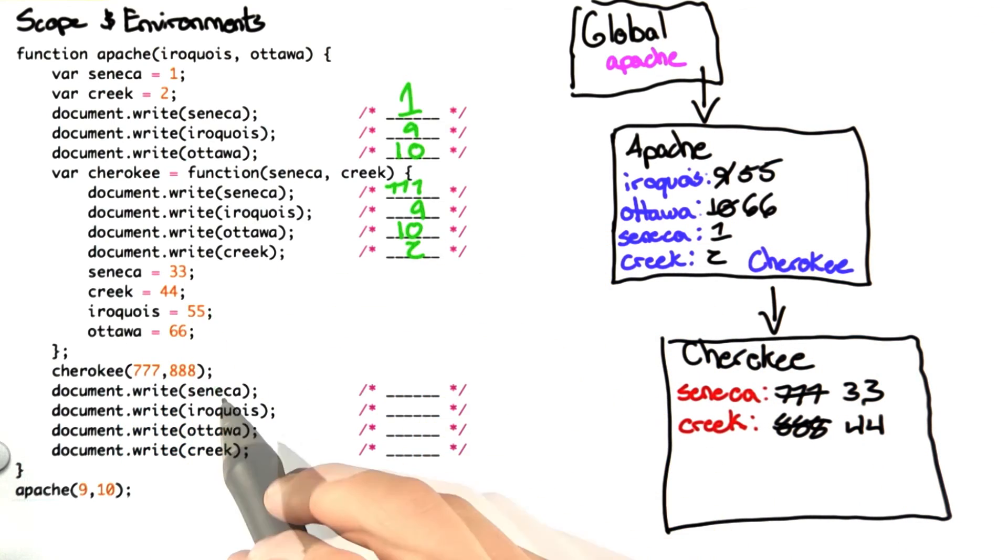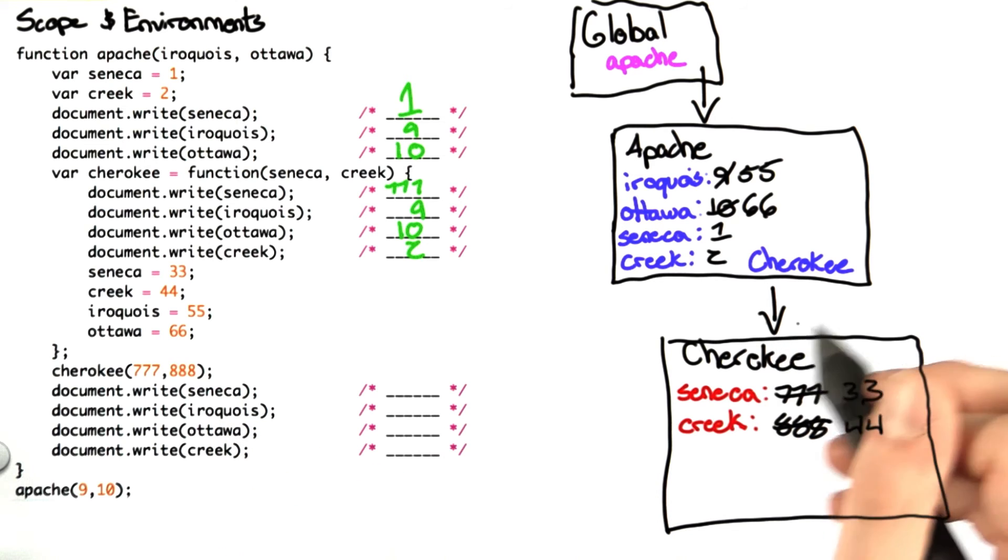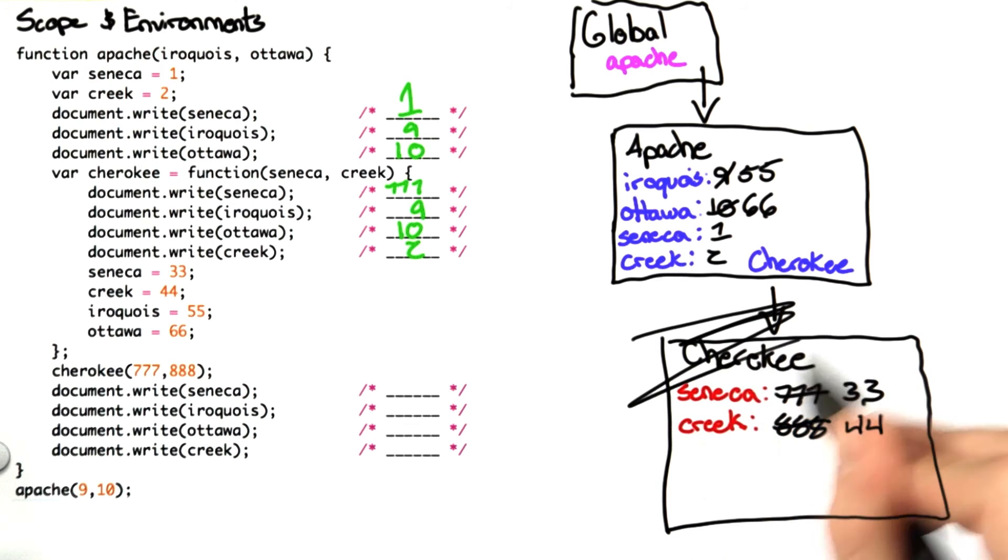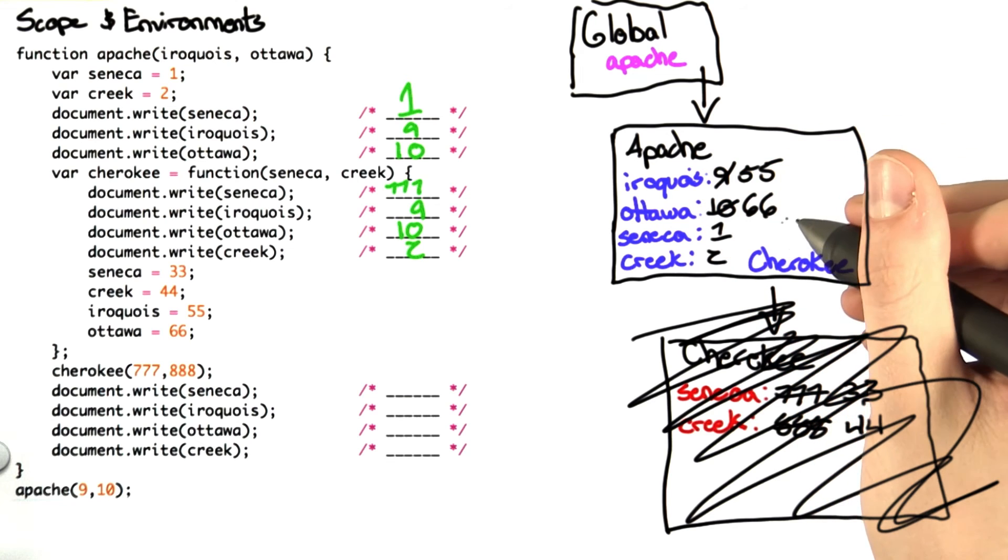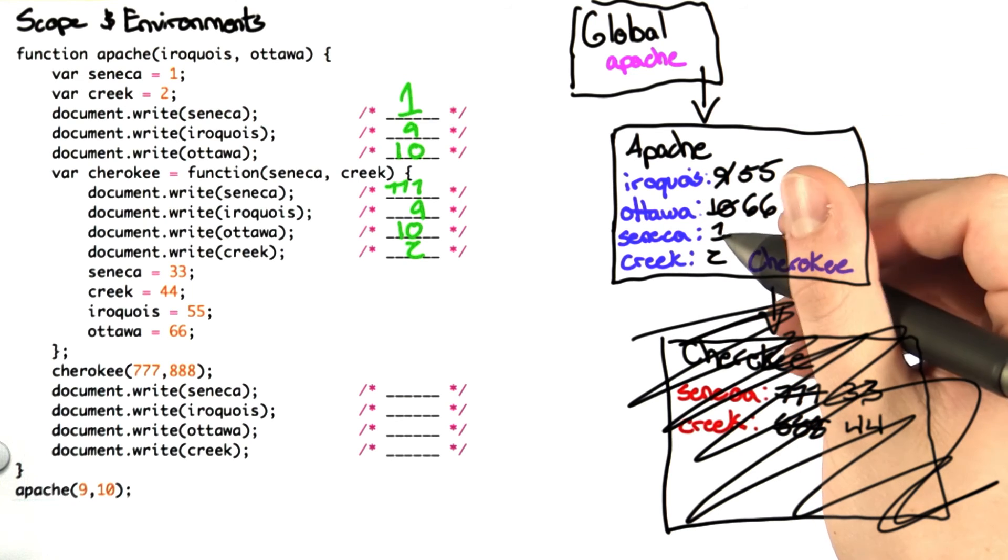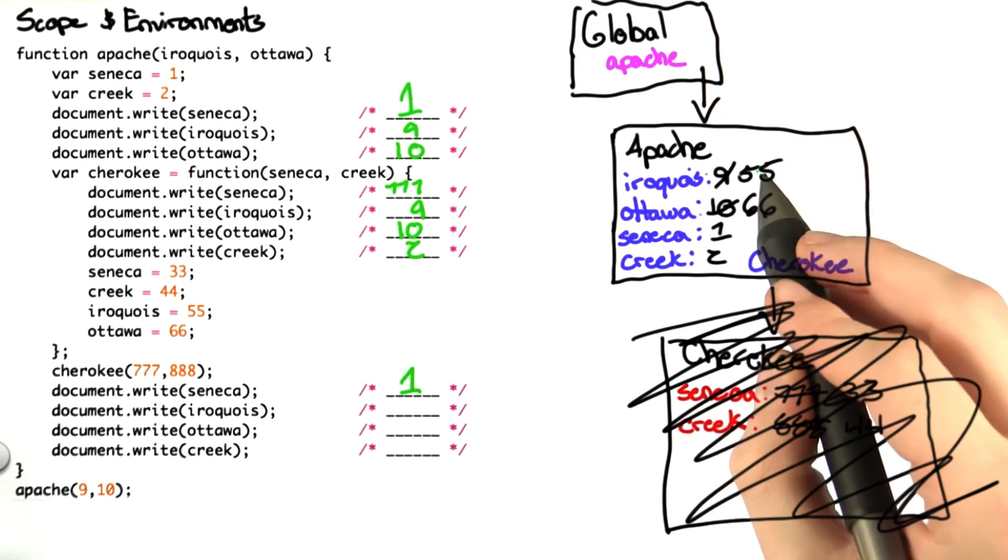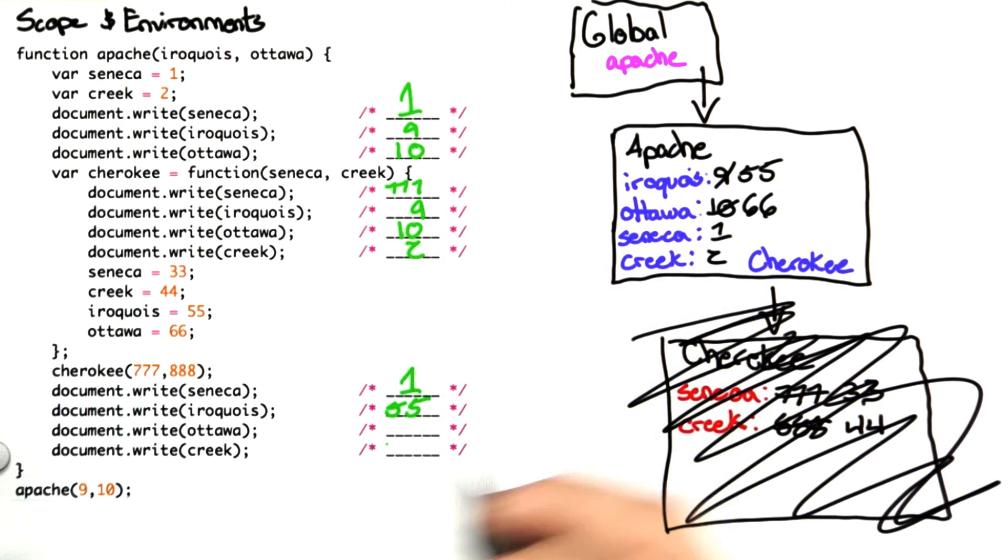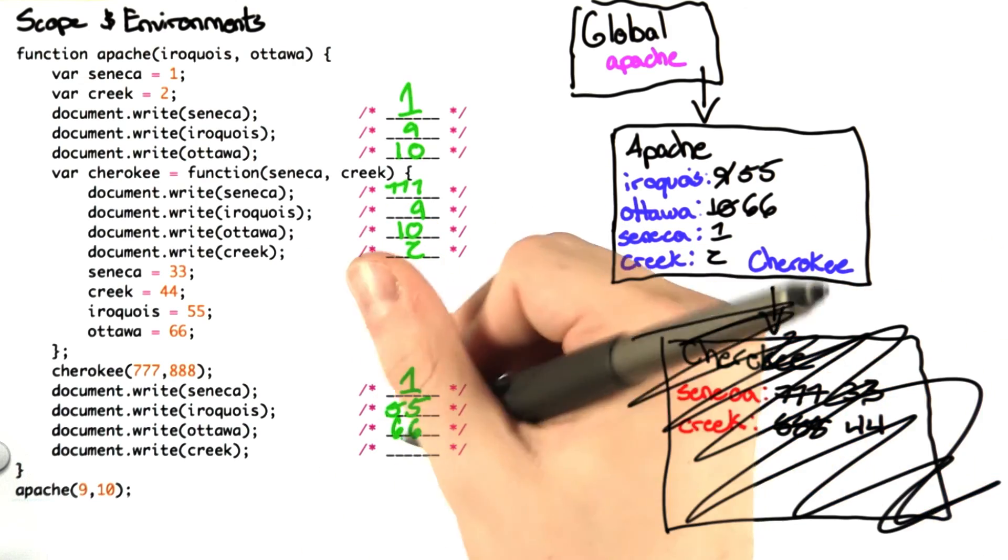We leave this function, and now we're printing out Seneca. Since we've left the Cherokee function, this environment no longer applies. We're simply looking at what's in Apache. The value of Seneca is 1. The value of Iroquois is 55. The value of Ottawa is 66. The value of Creek is 2.